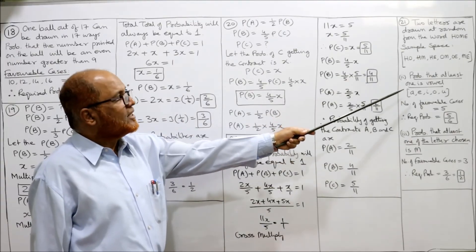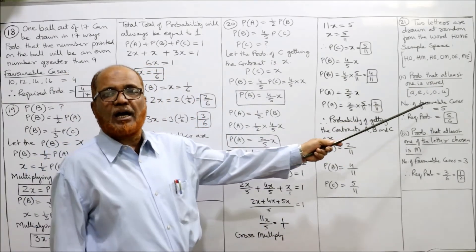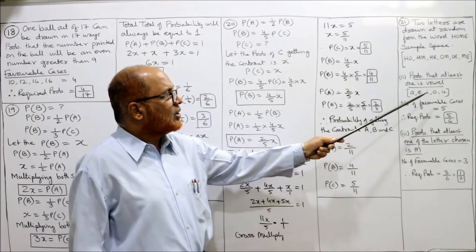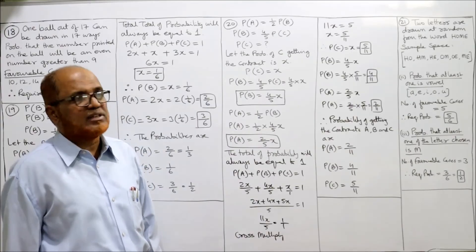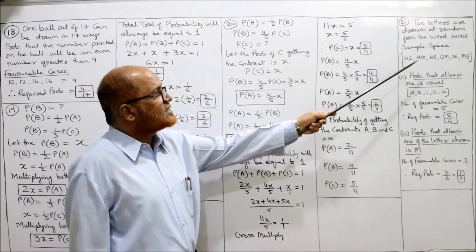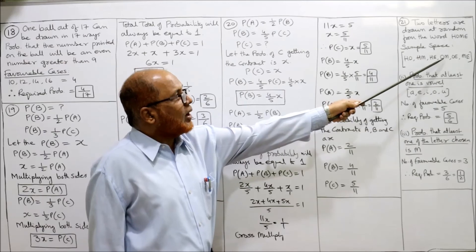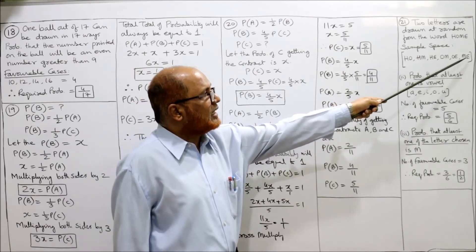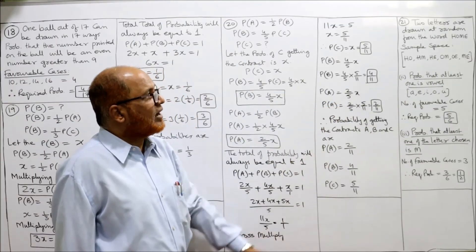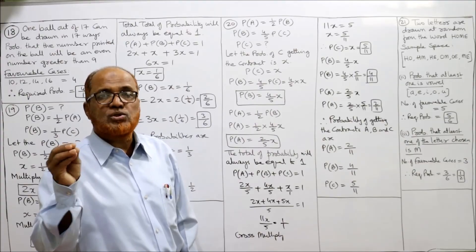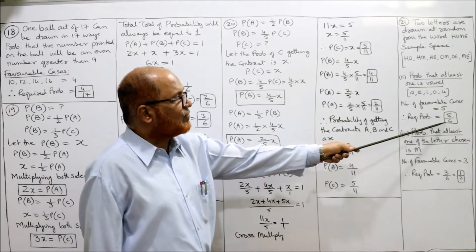First question complete. Second: probability that both letters are vowels, and third: at least one is a vowel. Vowels are A, E, I, O, U. We have to see how many cases have vowels. HO — O is a vowel. HM — no vowel. HE — E is a vowel. OM — O is a vowel. OE — O and E are vowels. ME — E is a vowel. Out of the 6 values, only 1 value has no vowel, so 5 favorable cases. Required probability is 5 by 6.